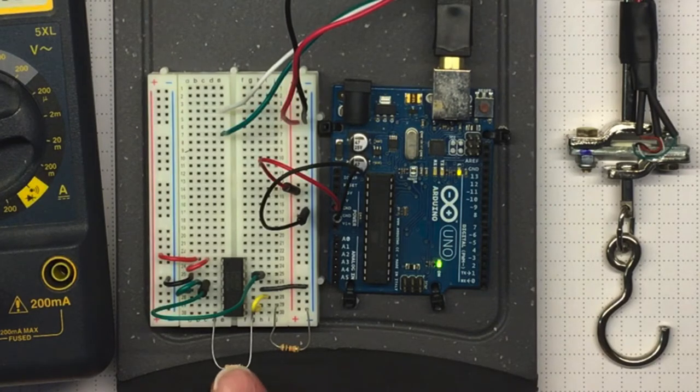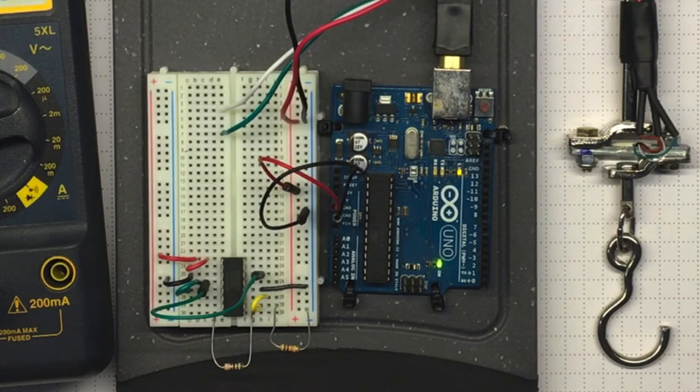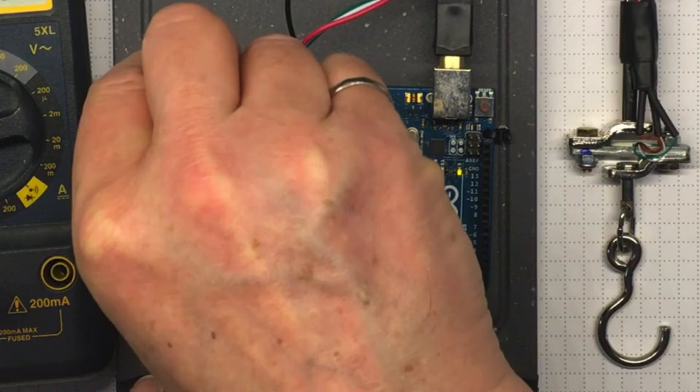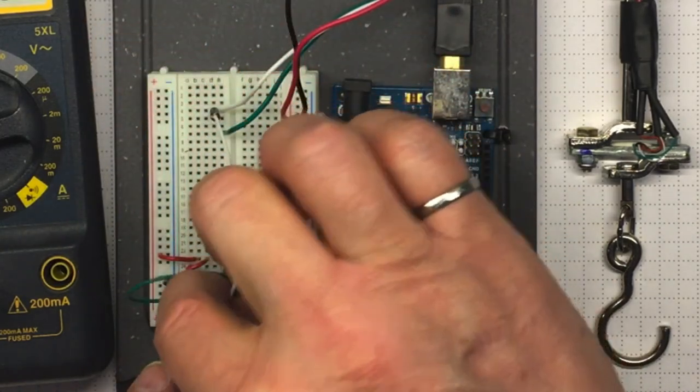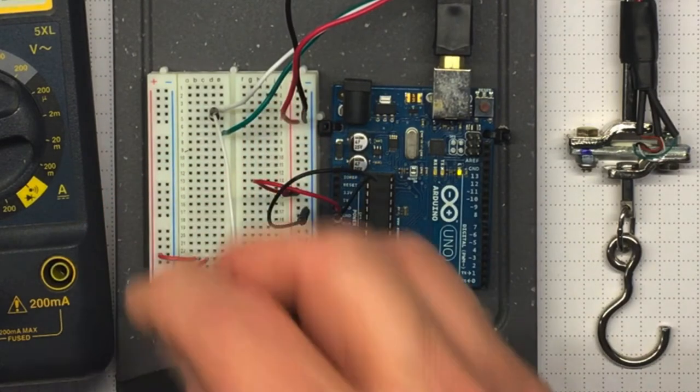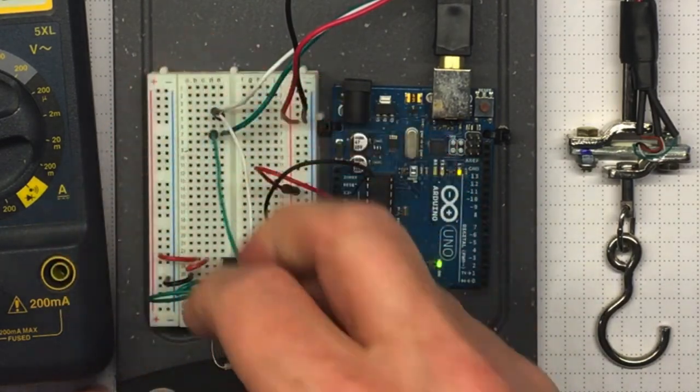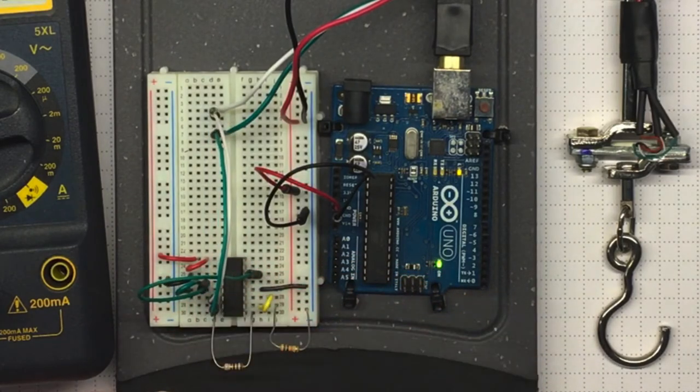So now I think I've got everything set up except for the inputs into the amplifier. So let's connect the white one to pin 6 and the green one to pin 7. And see what we get.